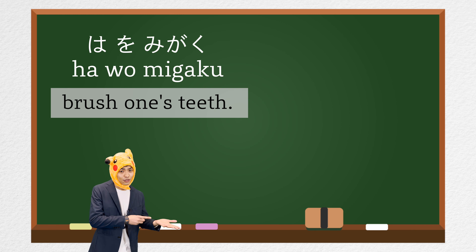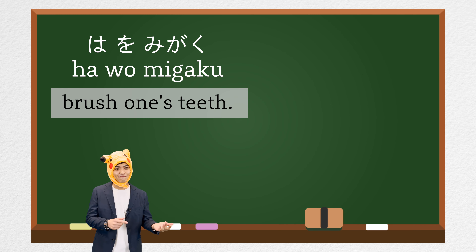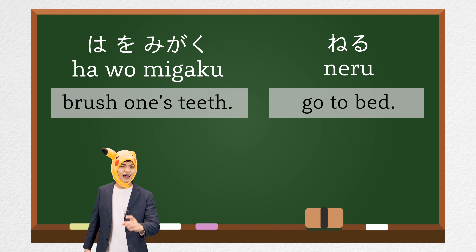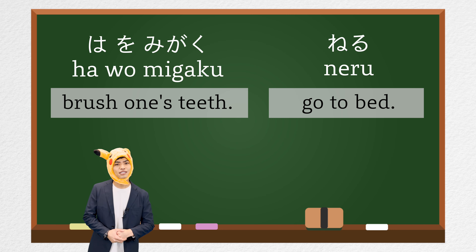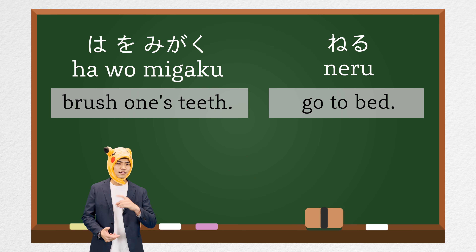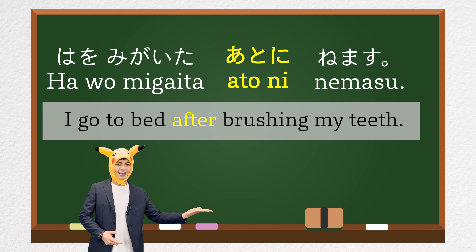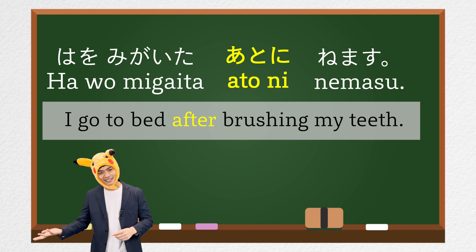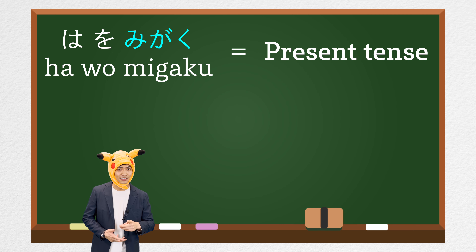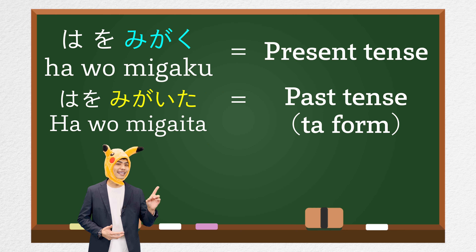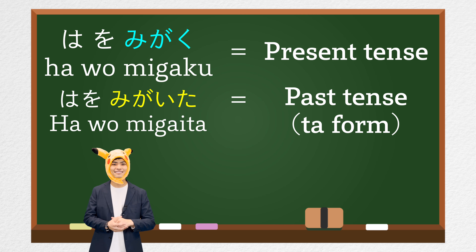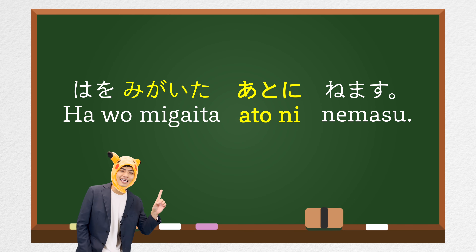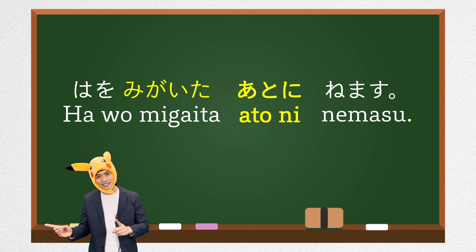Let's practice another example. Action 1 is 歯を磨く (brush teeth), and then action 2 is 寝る (sleep). How would you say this using あとに? The answer is 歯を磨いたあとに寝ます. Note that 歯を磨く changes to past tense 歯を磨いた. 歯を磨くあとに寝ます is incorrect.